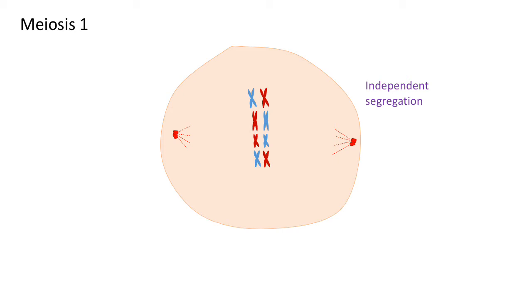As you can see, parent one and parent two are on either side - it's not just parent one on one side and parent two on the other side. There's been random alignment of the homologous chromosomes, and that's independent segregation.